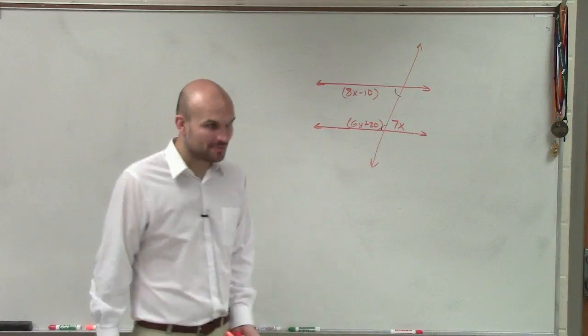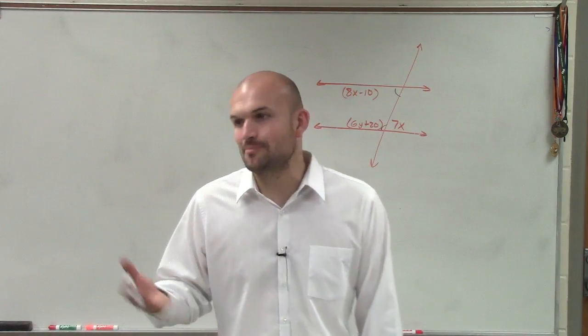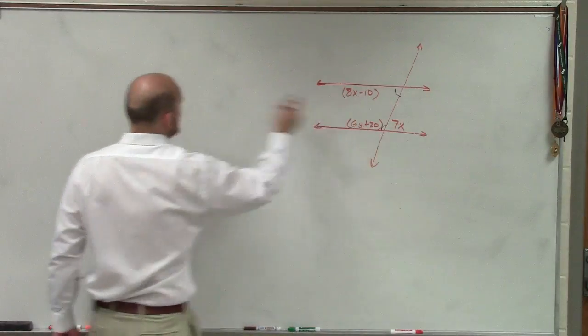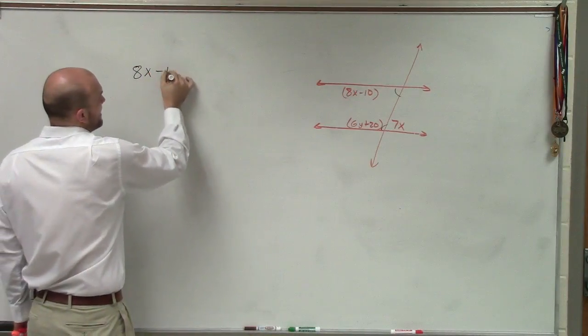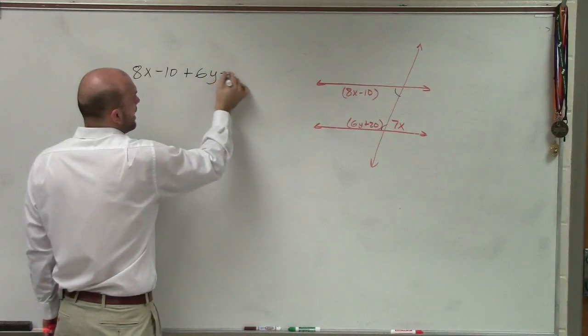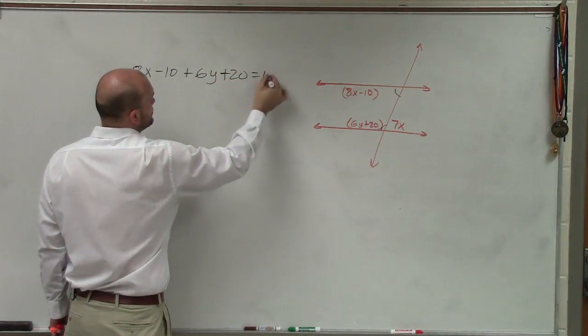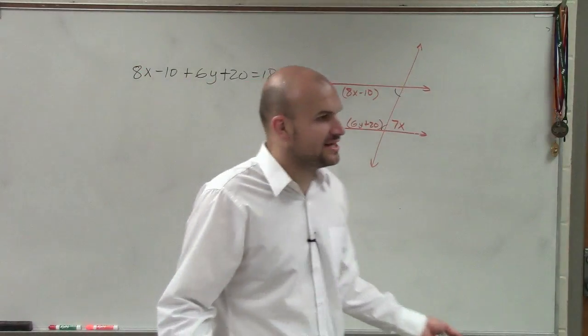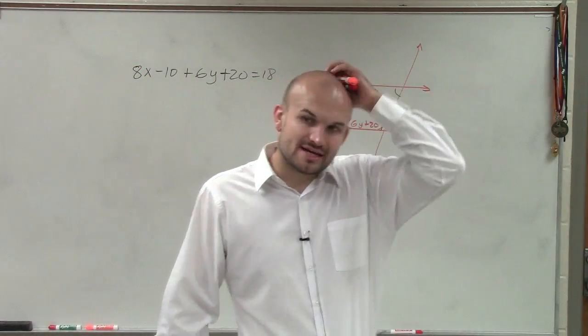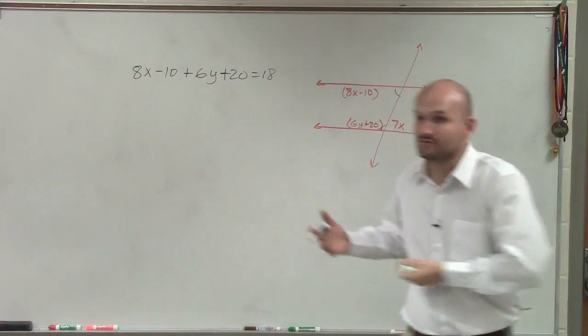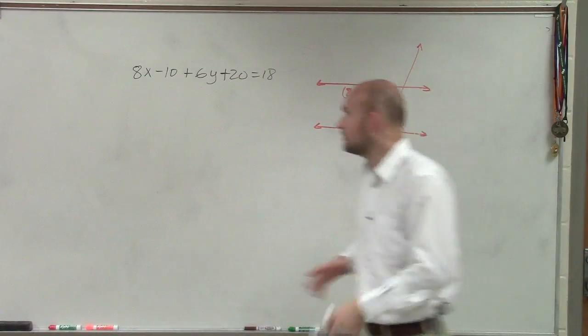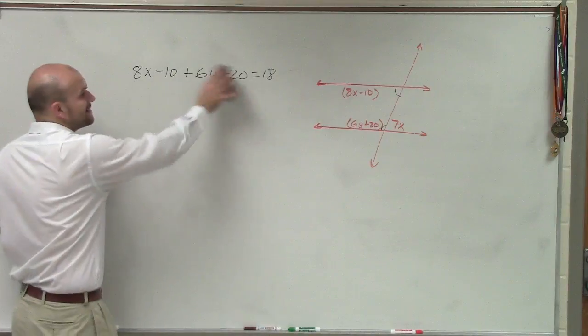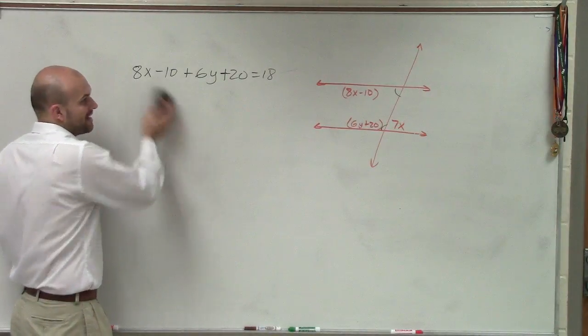But here's the problem. Remember, consecutive interior angles are supplementary, meaning they add up to 180. So if I was to write an equation for this, I would have 8x minus 10 plus 6y plus 20 equals 180. The problem with that is I have two variables and only one equation. When you guys talk about systems of equations, when we have two variables, we have to have two different equations. So even though that is a good angle relationship, since we have two different variables, we can't solve it that way.